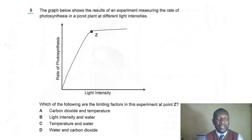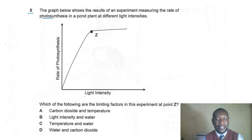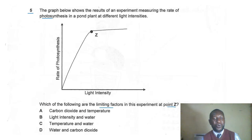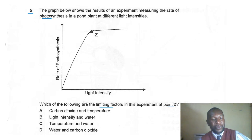Question five: the diagram shows the rate of photosynthesis in a pond plant at different light intensities. Which are the limiting factors at point Z? We have seen this type of question before — the limiting factor was asked at a different point last time.